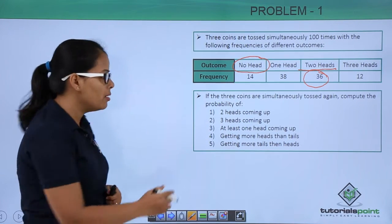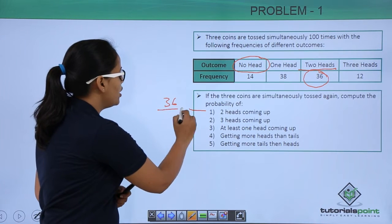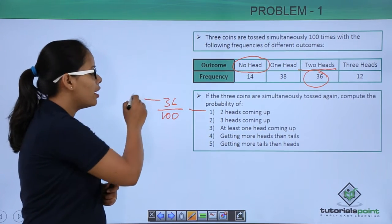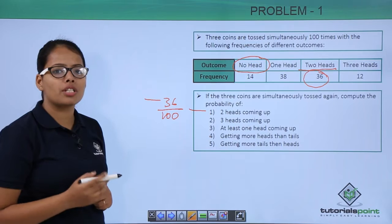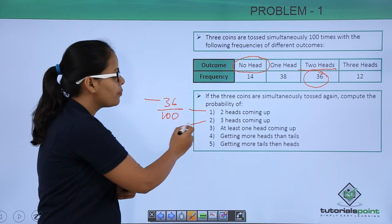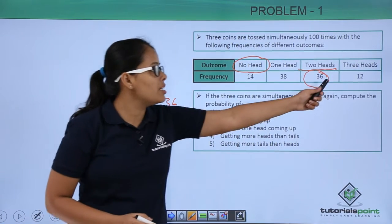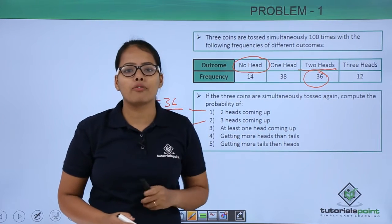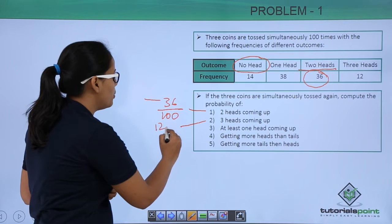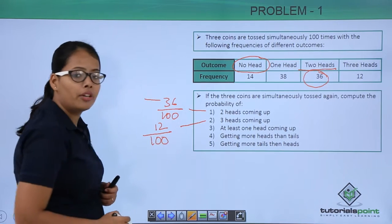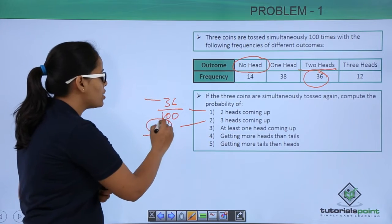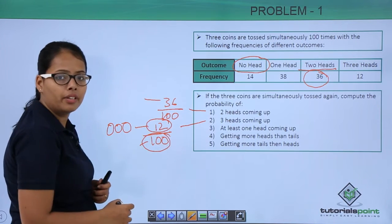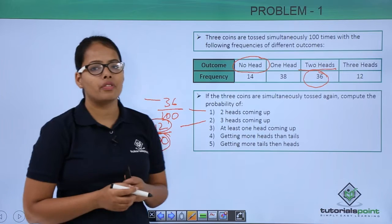Probability in this case will be 36 divided by 100, because total number of tosses were 100 and out of 100, only on 36 tosses 2 heads appeared. Now in the second case, 3 heads coming up. You can see from this table that 3 heads appeared only on 12 tosses. So probability in this case will be 12 divided by 100. Total number of tosses were 100.